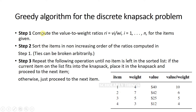Step 1: compute the value to weight ratios for the items given. Step 2: sort the items in decreasing order of their value to weight ratio. Step 3: repeat the following operation until no item is left in the sorted list.